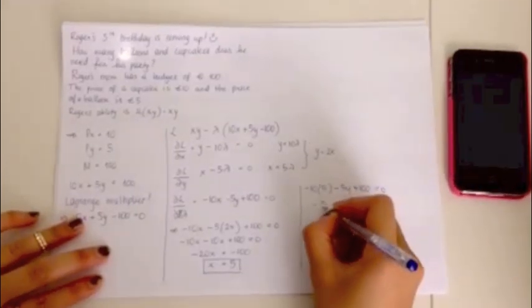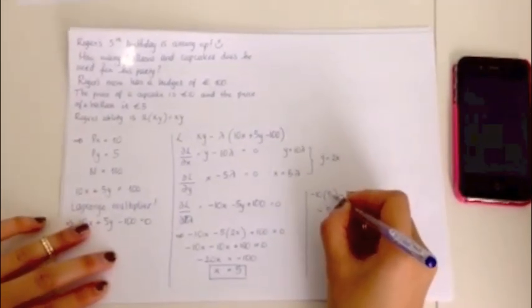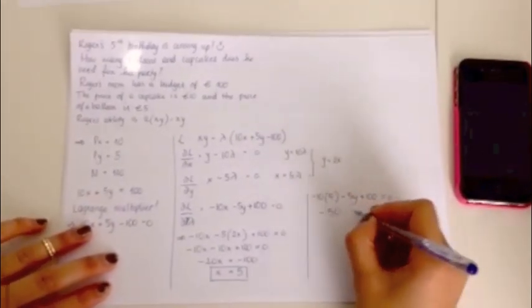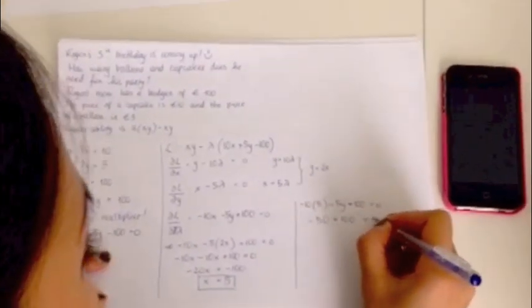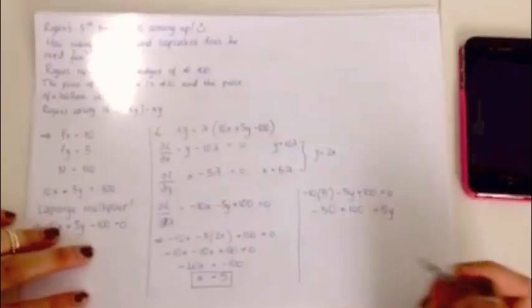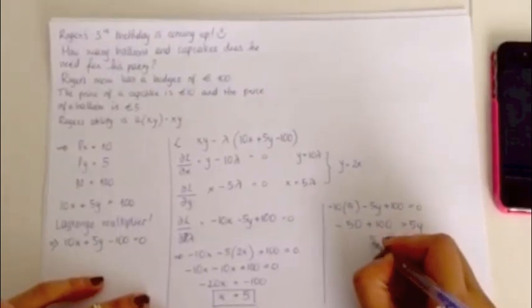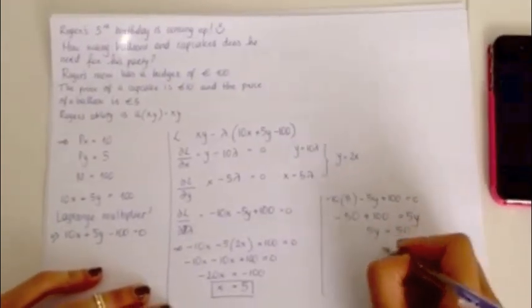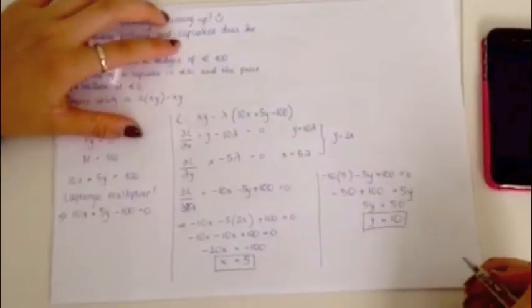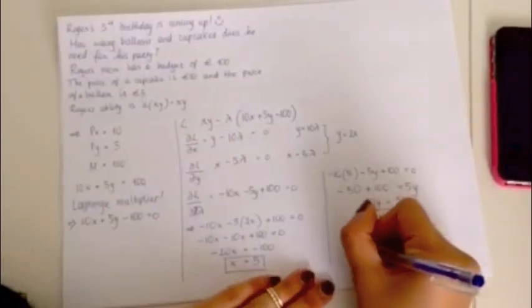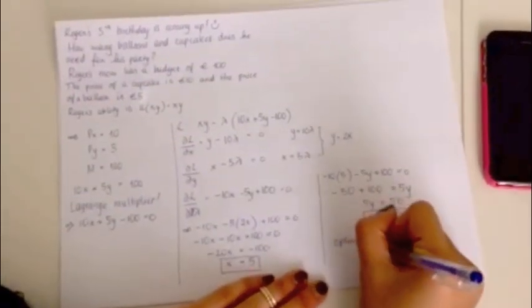The minus 50. Minus 5Y equals... Sorry, 50 equals 5Y, and therefore, Y equals 10. Okay, so our optimal bundle in this situation is 5 of X and 10 of Y.